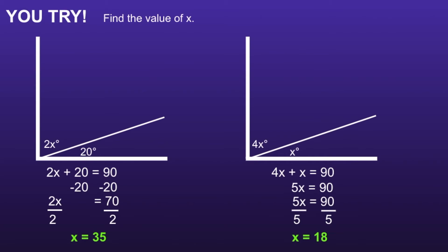In the first one, x is equal to 35. And in the second one, x is equal to 18. If you had either of these incorrect, I would recommend you pause, review your work, and see if you can find your mistake.